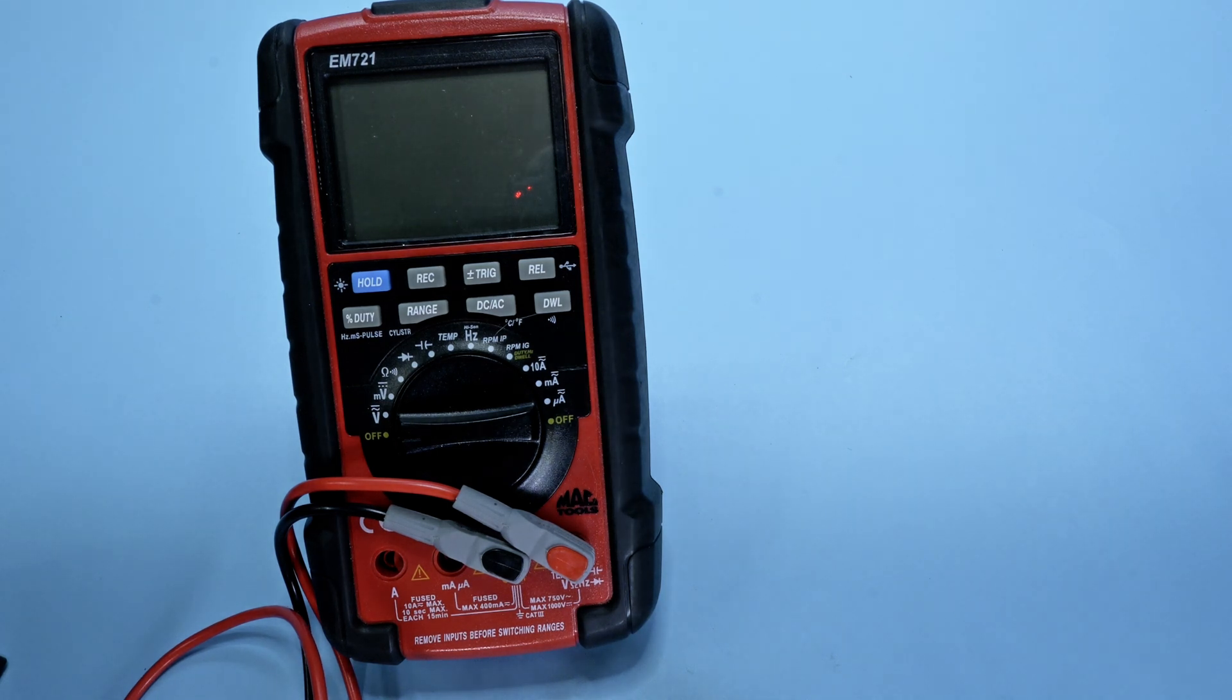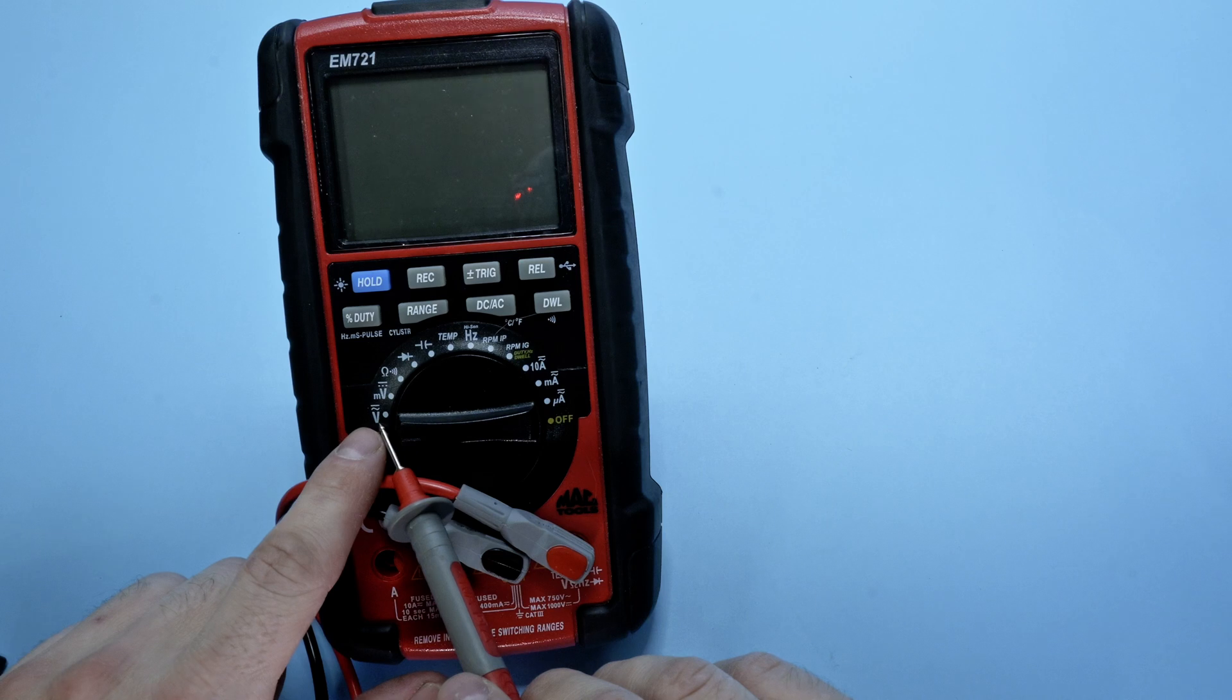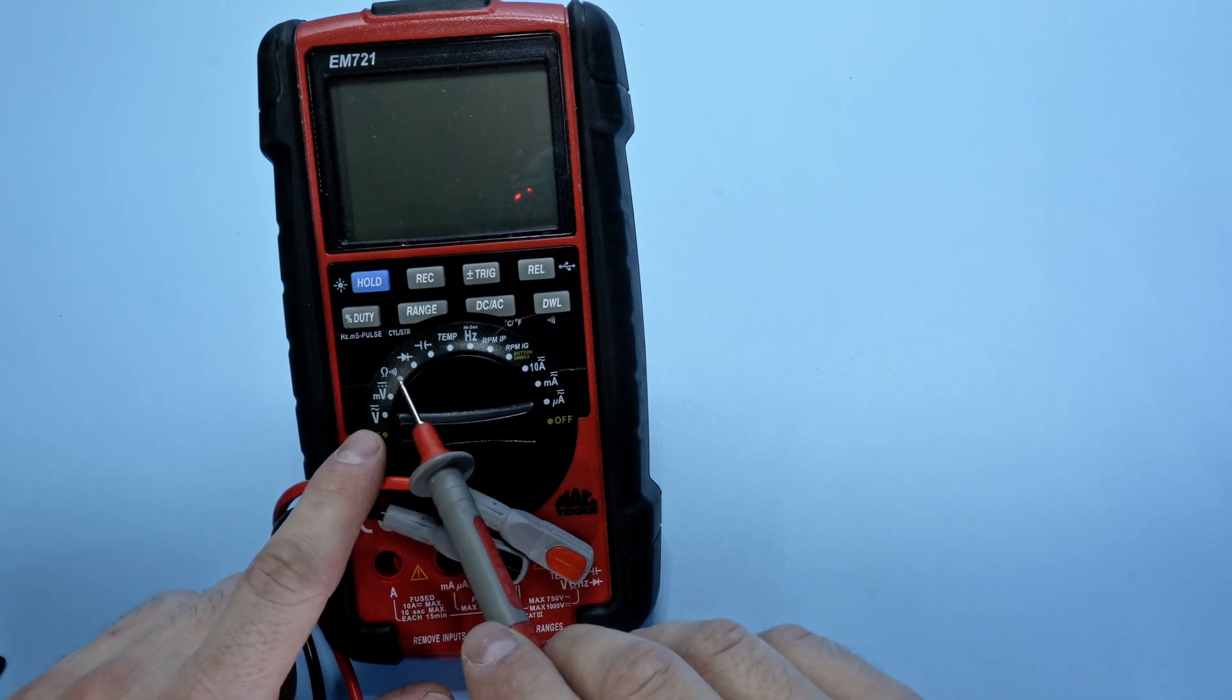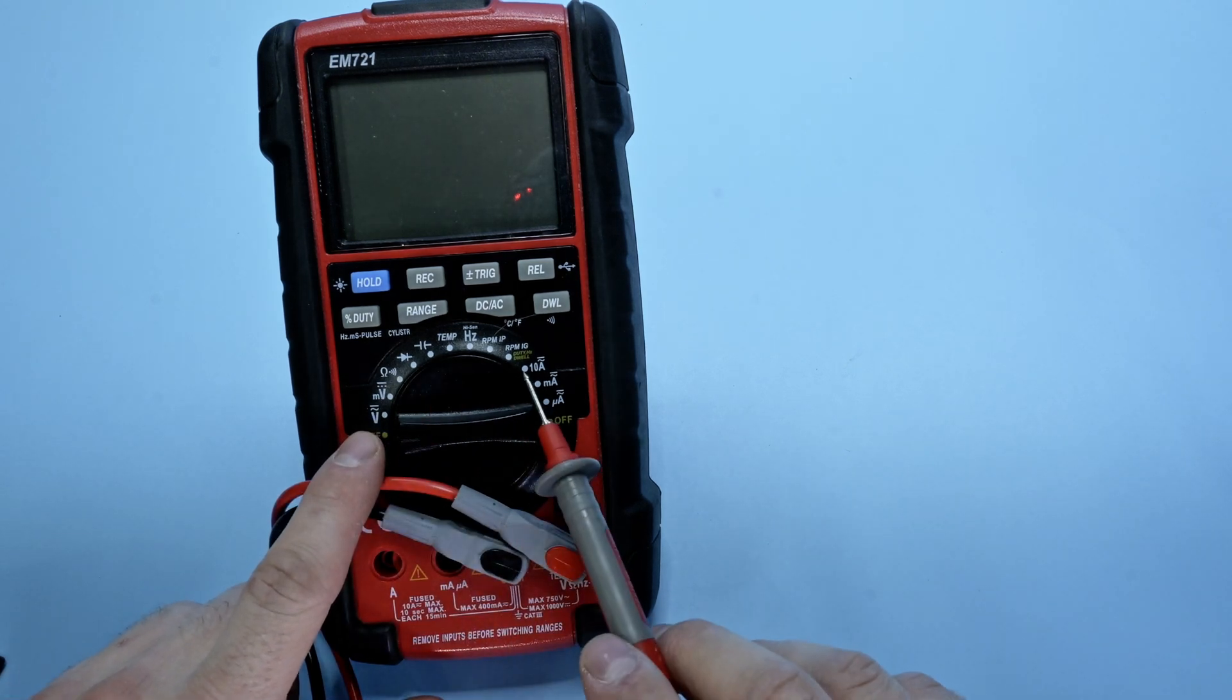Let's have a look at the basic functions of a multimeter. Today what we're going to look at is voltage, resistance and continuity, as well as amperage.